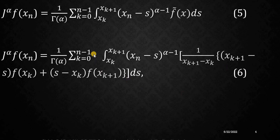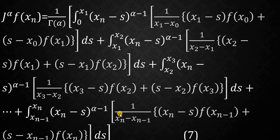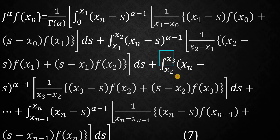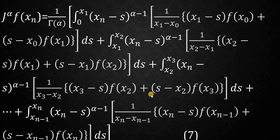Equation 6 is expanded by substituting values of k from 0 to n−1, yielding equation 7. The first integral runs from 0 to x₁, the second from x₁ to x₂, the third from x₂ to x₃, and the last from xₙ₋₁ to xₙ. Each integrand has two terms. This equation 7 is obtained after the full expansion of equation 6.